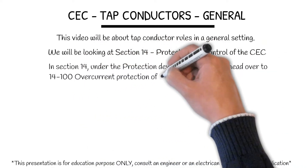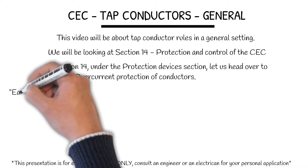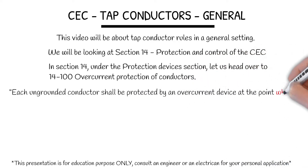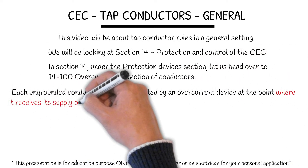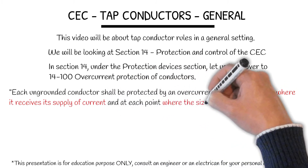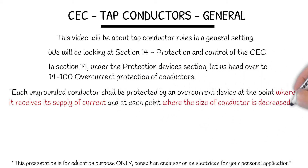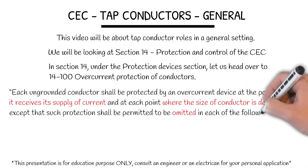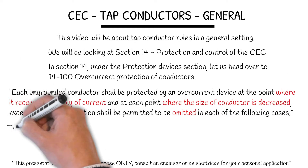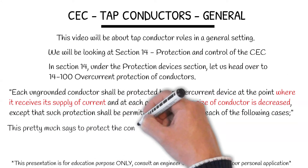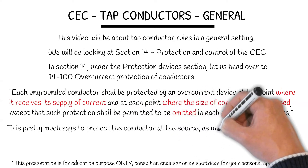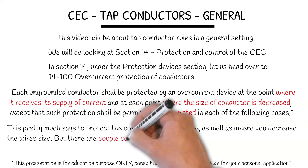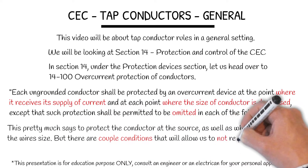Each ungrounded conductor shall be protected by an overcurrent device at the point where it receives its supply of current and at each point where the size of conductor is decreased. Except that such protection shall be permitted to be omitted in each of the following cases. This pretty much says to protect the conductor at the source as well as where you decrease the wire size, but there are a couple of conditions that will allow us to not require an overcurrent device.